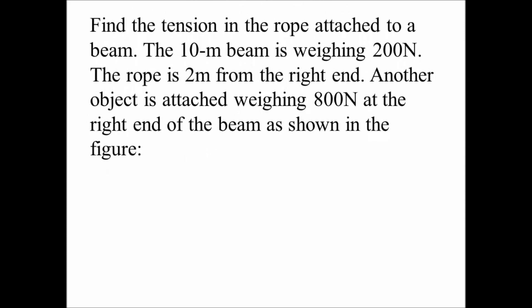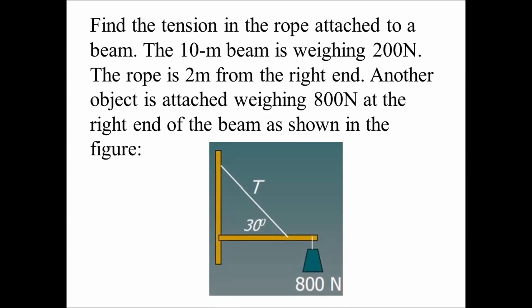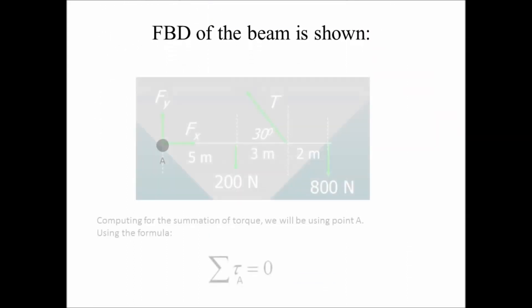Find the tension in the rope attached to a beam. The 10 meter beam is weighing 200 Newtons. The rope is 2 meters from the right end. Another object is attached weighing 800 Newtons at the right end of the beam as shown in the figure.